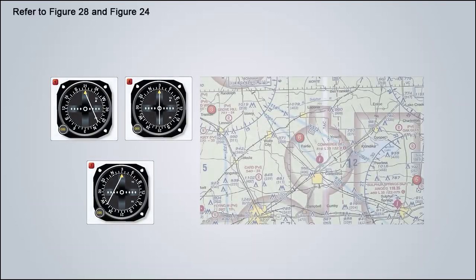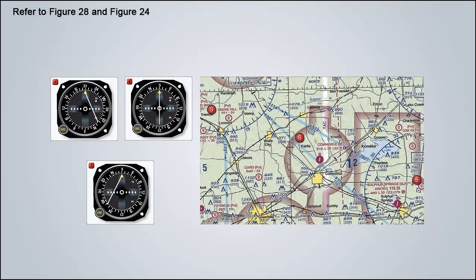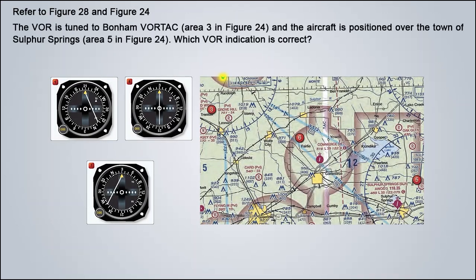Finally, let's go over the toughest of the questions involving figure 28. This one says: refer to figure 28 and figure 24. The VOR is tuned to Bonham Vortac, area 3 in figure 24, and the aircraft is positioned over the town of Sulphur Springs, area 5 in figure 24. Which VOR indication is correct, with the answers being 1, 8, or 7? Again, we will start by checking each of the three given VORs to see which one matches the position reported by the question.